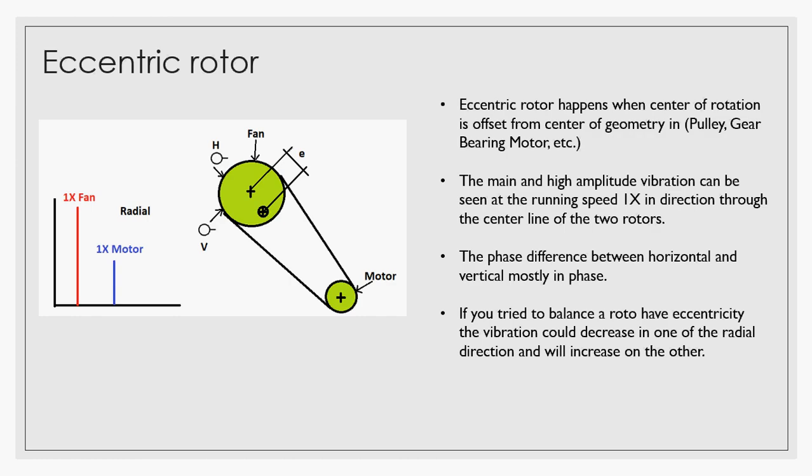The eccentric rotor happens when the center of rotation is offset from the center of geometry, and this could occur in pulleys, in gears, and in the bearing of the motors.